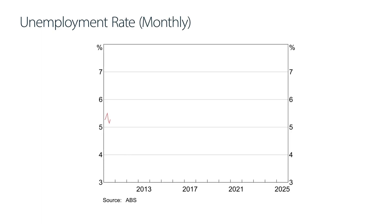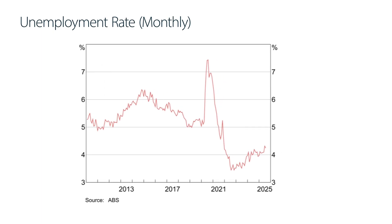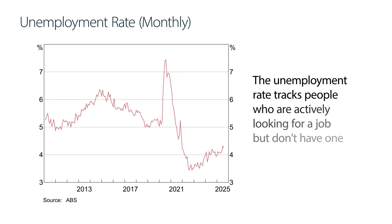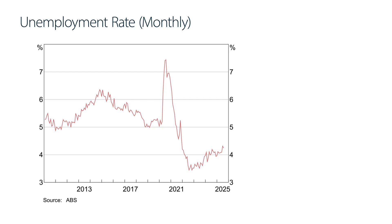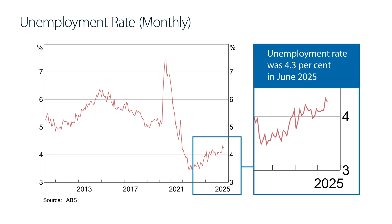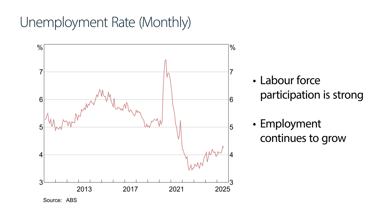Importantly, the labour market has been resilient over this period. In this chart, the red line shows the unemployment rate over time. The unemployment rate tracks people who are actively looking for a job but don't have one. Despite higher interest rates, the unemployment rate stayed low, sitting at 4.3% in June, only slightly higher than earlier in the year. Labour force participation is also strong, and employment continues to grow. This is a good result for Australia — inflation has come down without a sharp rise in unemployment.